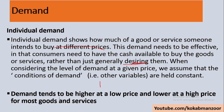Demand tends to be higher at a lower price and lower at a higher price. When the price decreases, demand increases — when things are available at a cheaper rate, you buy more, and vice versa. When price goes up, it becomes difficult to buy, so we reduce demand. This inverse relationship between price and demand is called the Law of Demand.